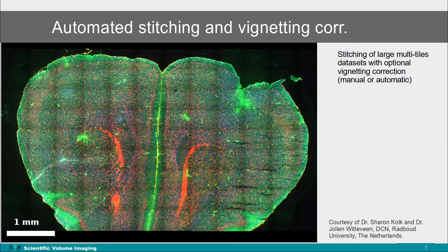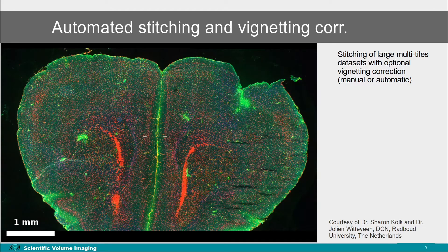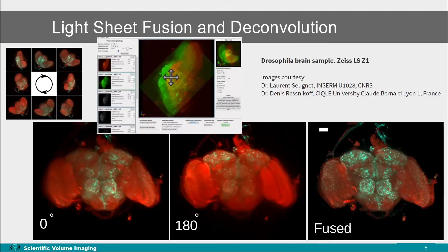Some additional Huygens tools. Huygens can stitch and automatically correct for vignetting issues. The stitcher is compatible with images from all microscopy types and of all sizes. Huygens Lightsheet Fuser allows alignment of multi-view images simply with your mouse cursor, and all types of lightsheet images can be deconvolved and fused.